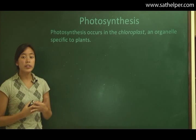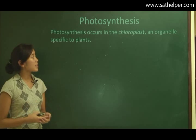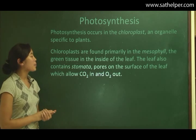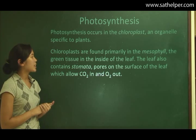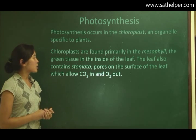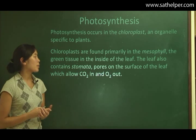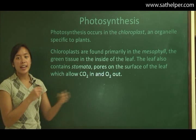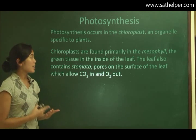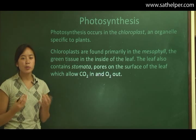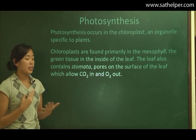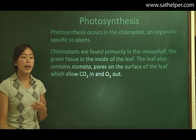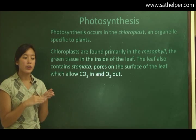Photosynthesis occurs in the chloroplast of plants, which is an organelle specific to plants. Chloroplasts are found primarily in the mesophyll, the green tissue in the inside of the leaf. The leaf also contains stomata, pores on the surface of the leaf, which allow carbon dioxide in and oxygen out. If you were to rip open a leaf diagonally so that you could see the different layers, the mesophyll would be the somewhat greener, somewhat spongier middle of the leaf. Stomata are these tiny little holes on the surface of the leaf, which can let different gases in and out. You can sometimes see them on the underside of the leaf.